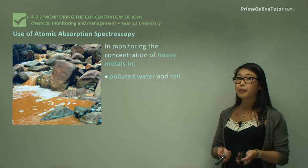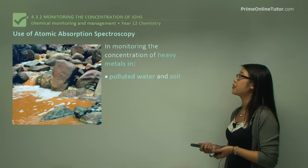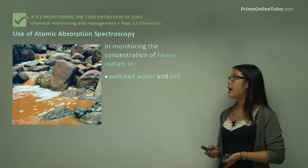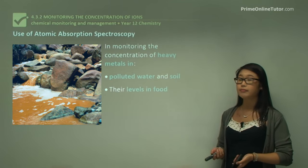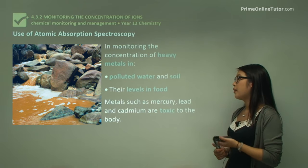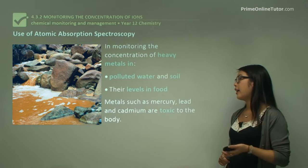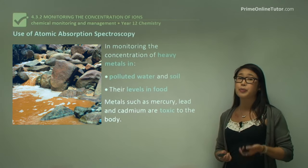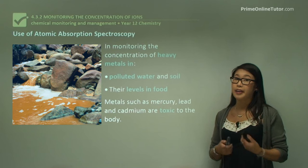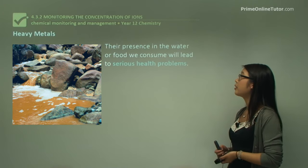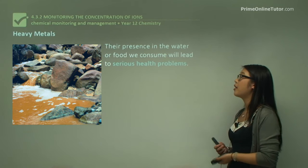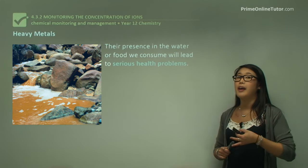AAS can also be used in monitoring the concentration of heavy metals in the soil and in polluted water, and there are also levels to check in food. Metals such as mercury, lead, and cadmium are toxic to the body, so we really need to look at how much is in the water and in our food. If we have too much in our food and water and consume it, this could lead to really bad health problems.